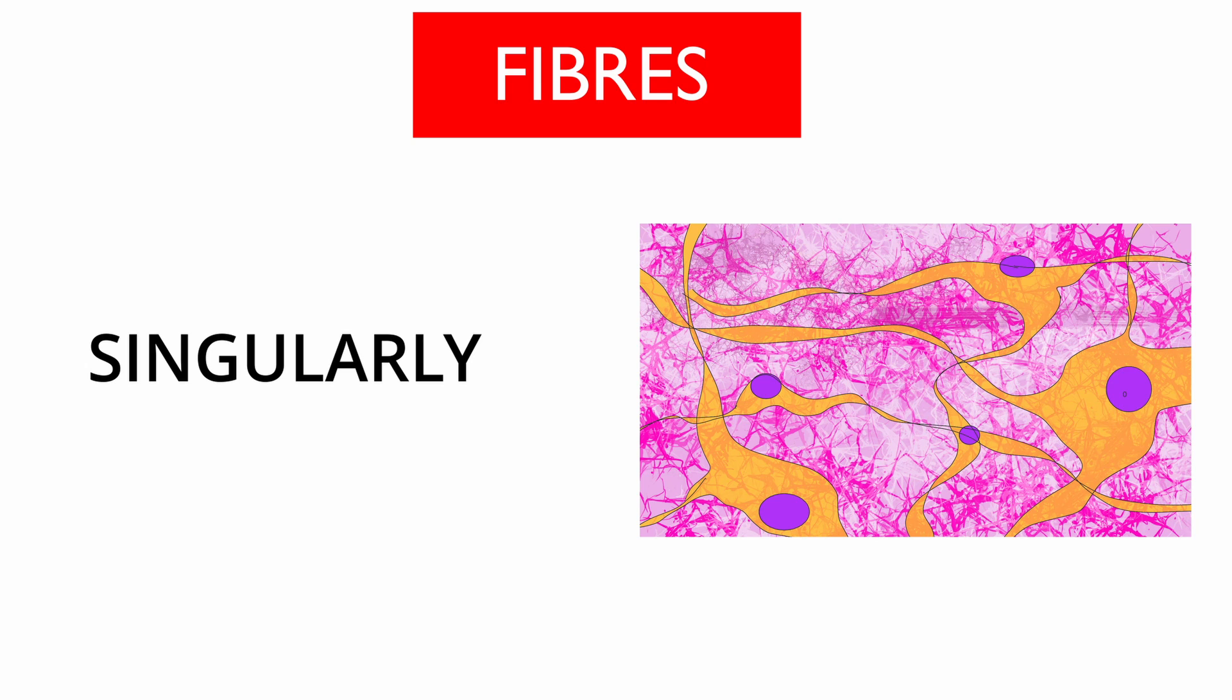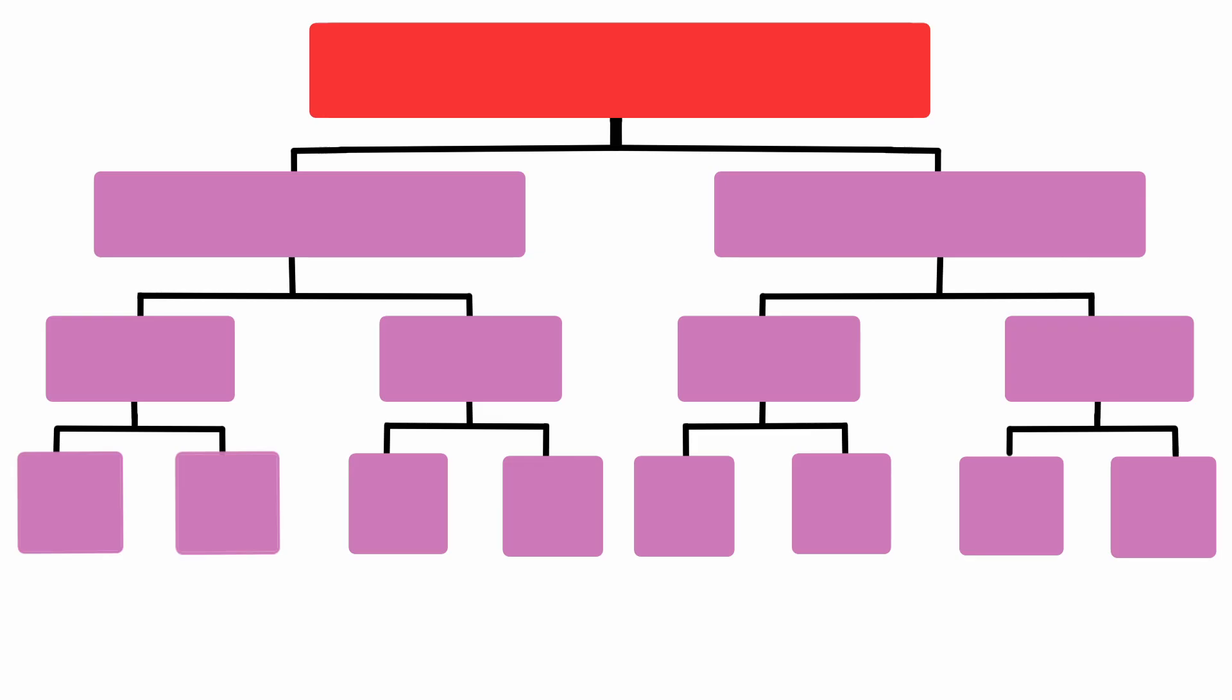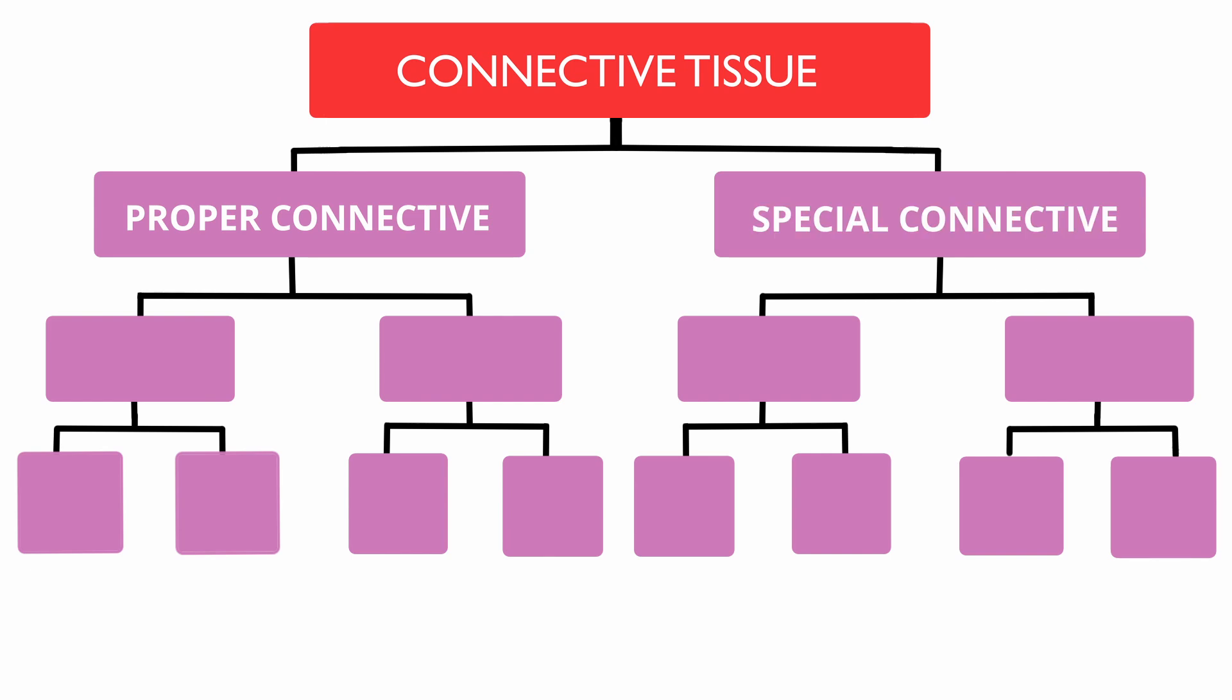Now that we know the basic components of connective tissues, we can look at the various types. The first level of classification divides connective tissue into proper connective tissue and specialized connective tissue. Under proper connective tissue, we have two types: loose connective tissue and dense connective tissue.